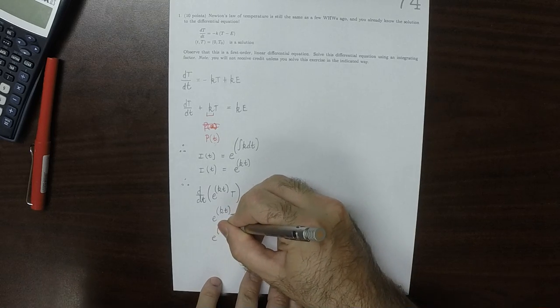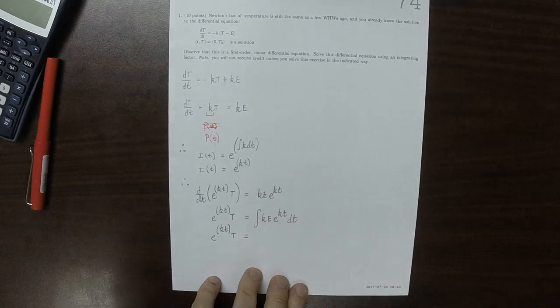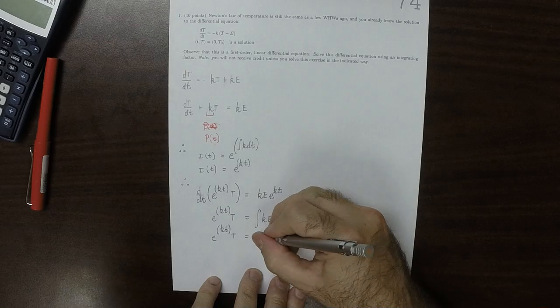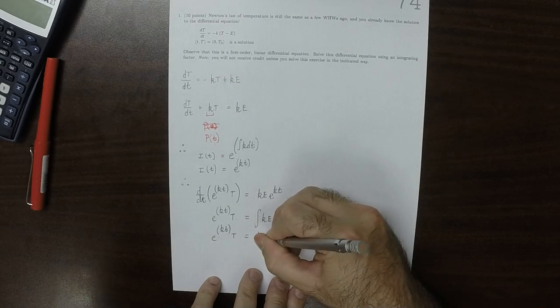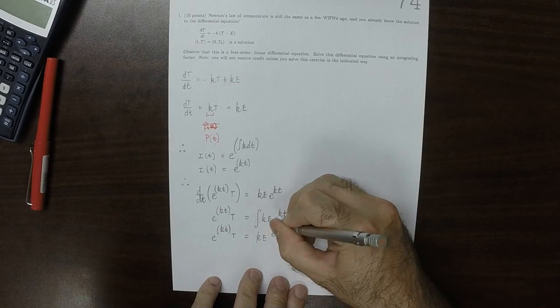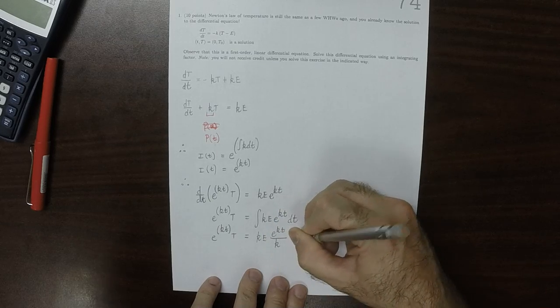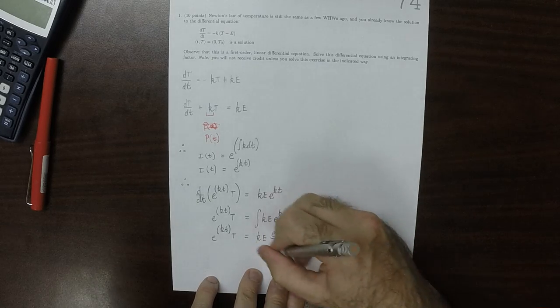Exponential K T exponential K T big T, well K and E are both constants, so this would be K E and then exponential K T divided by K plus some unknown constant C. Those K's cancel.